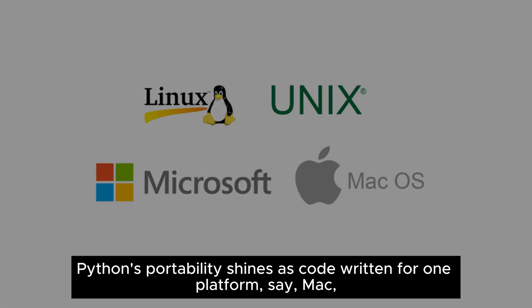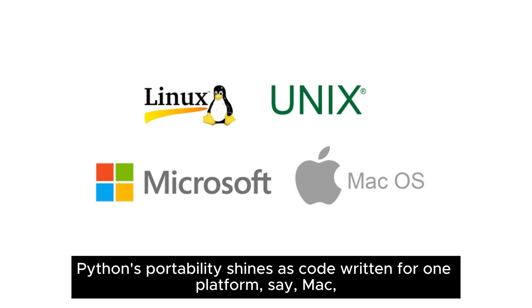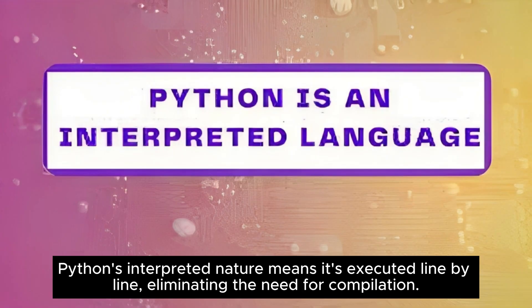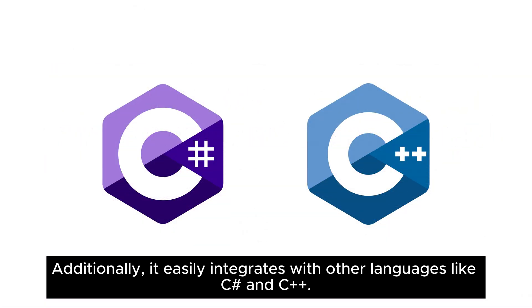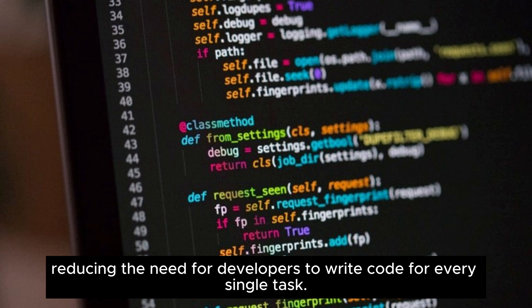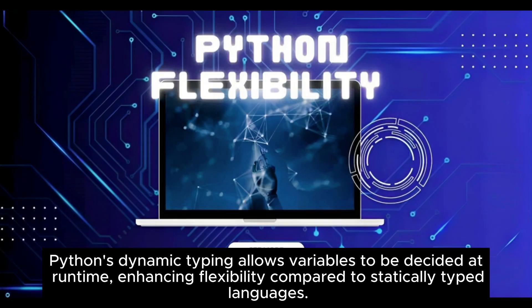Python's portability means code written for one platform, such as Mac, can seamlessly run on others like Linux, Windows, and Unix. Python's interpreted nature means it's executed line by line, eliminating the need for compilation, and it easily integrates with other languages like C# and C++. Python's extensive standard library provides a rich set of modules and functions, reducing the need to write code for every task. Additionally, Python's dynamic typing allows variables to be decided at runtime, enhancing flexibility compared to statically typed languages.